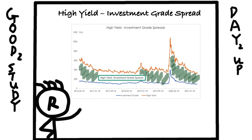The orange line is the high yield spread, which is calculated by subtracting government bond yield from junk bond yield. The blue line represents the IG spread, which is calculated by subtracting government bond yield from IG bond yield. The green area is the spread between junk bond and IG bond, which is the potential profit you can make from this strategy.